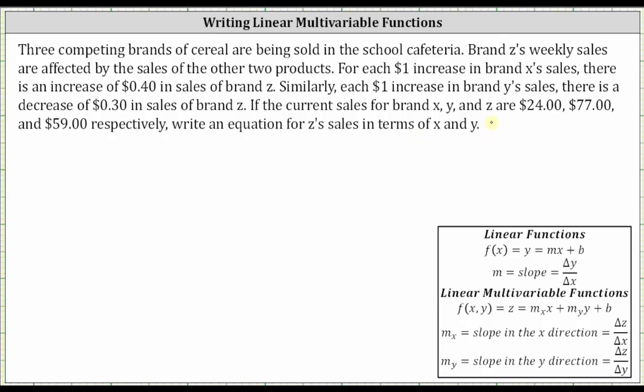The first thing to recognize here is that we will have a linear equation where Z is defined in terms of X and Y. We know the equation is going to be linear because for each $1 increase in brand X's sales, Z's sales increases by the constant amount of 40 cents, and for every $1 increase in brand Y's sales, there's a constant decrease of 30 cents in the sales of brand Z.